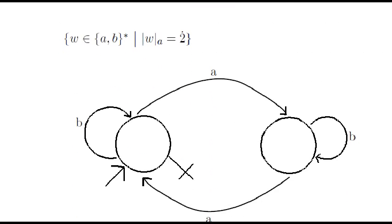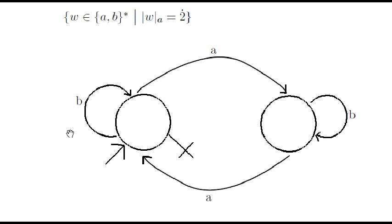We'll use two states, because to recognize words with an even number of a's, at any point of the execution, we need to remember whether the number of a's until this point is even or odd.